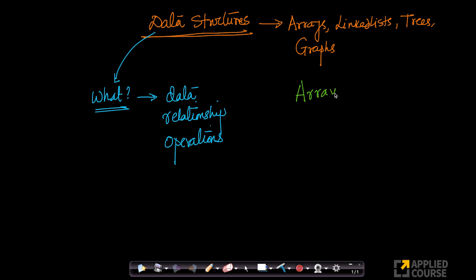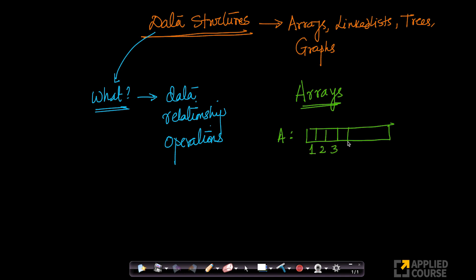Let us take a very simple example to understand this concretely instead of theoretically. We all know arrays. We often represent an array like this — from programming language to programming language this could differ. This is an array of 8 elements. Indexing could differ from language to language; in C, C++, or Java, the first element is given index 0. So the indices start from 0 up to n minus 1, if n is the size of the array.